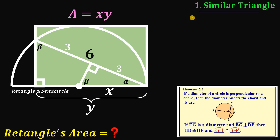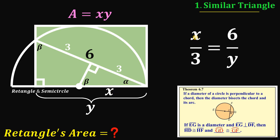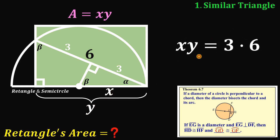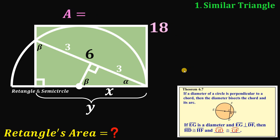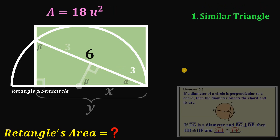Now we use the concept of similar triangles. We take the ratio of hypotenuse to longer leg: x over 3 equals 6 over y. Cross-multiplying gives x·y = 3 × 6 = 18. Since x·y is the area of this rectangle, the area of the rectangle is 18 square units. That is method number one.